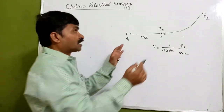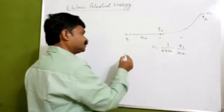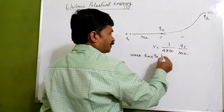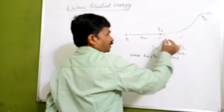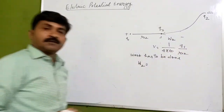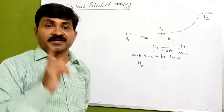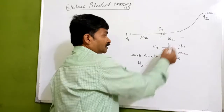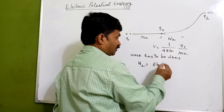If we are bringing any positive charge from infinity to this point, work has to be done. The work done W2 is defined by the electric potential — the work done in bringing a unit positive charge from infinity to any point in the electric field.